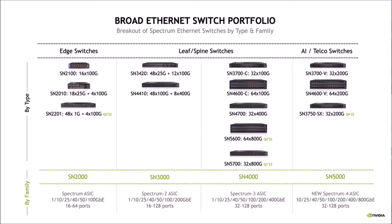The SN3000 is based off of the Spectrum 2 ASIC, 1 to 200 gig, 16 to 128 ports — the 3420 and the 4410 in that series. And then the Spectrum 3 ASIC from 1 to 400 gig, 32 to 128 ports. Any switches with a green nomenclature to the right are typically road-mapped. The 2201 on the left is basically your out-of-band management switch. The 5600 and 5700 are Spectrum 4 ASICs, and the 4000 series and 3700 series speeds and feeds are shown there as well.